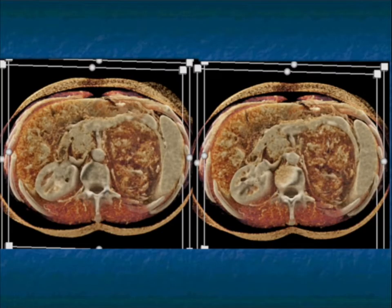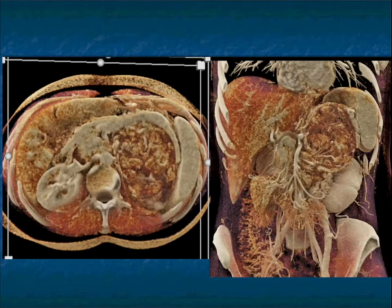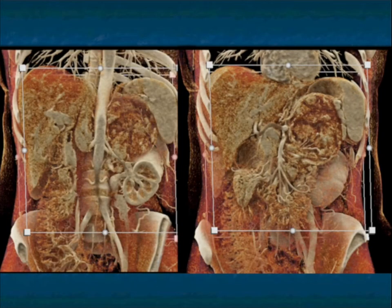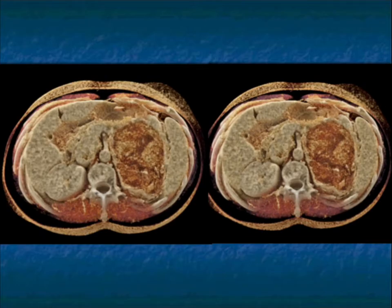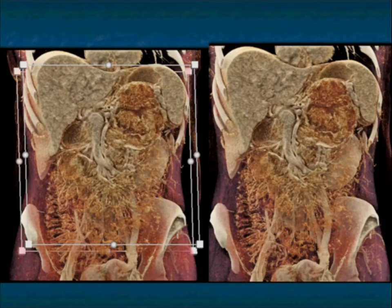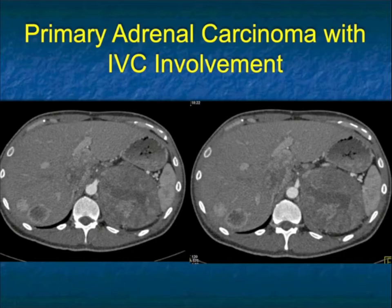Here's a pretty example of that involvement on the cinematic rendering — the necrotic tumor with the neovascularity. You can see the renal vein involvement with the neovascularity in the renal vein as well as in the patient's IVC. And here's a range of cinematic views which also nicely show the markedly dilated left gonadal vein.